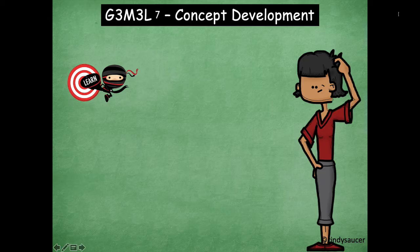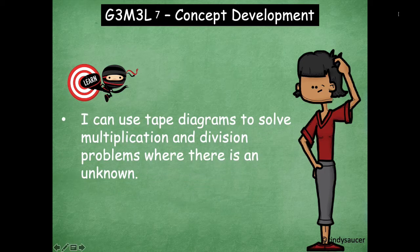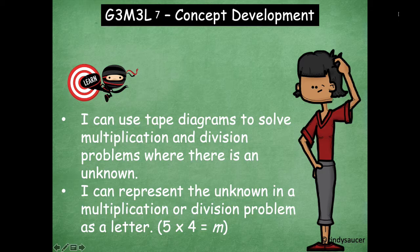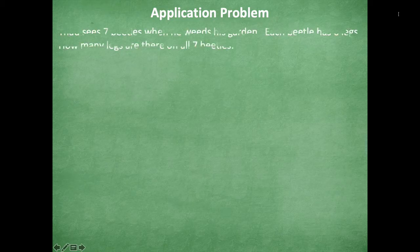So we have two learning goals for today. Our first learning goal is: I can use tape diagrams to solve multiplication and division problems where there is an unknown. And our other learning goal for today says: I can represent the unknown in a multiplication or division problem as a letter. So for example, five times four equals m, so m is representing that unknown product.